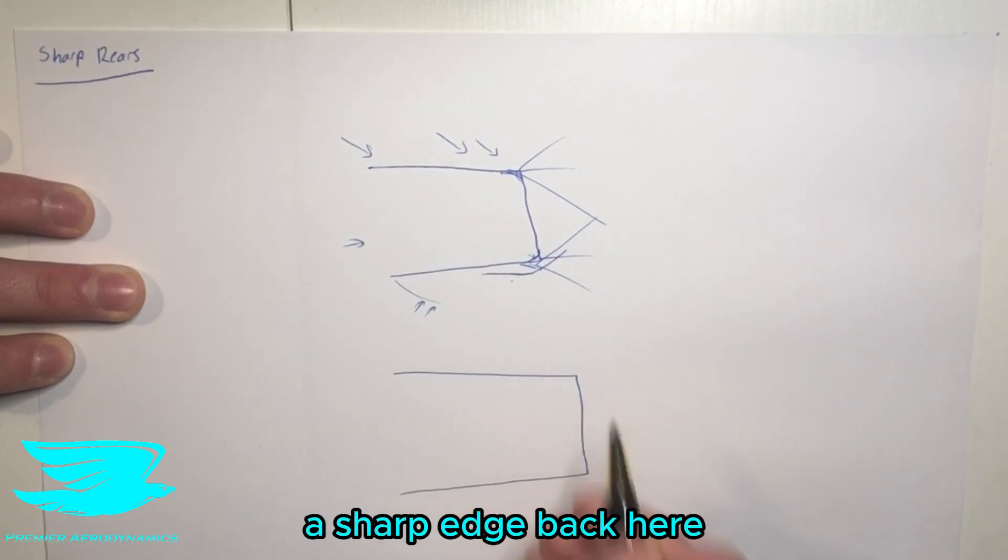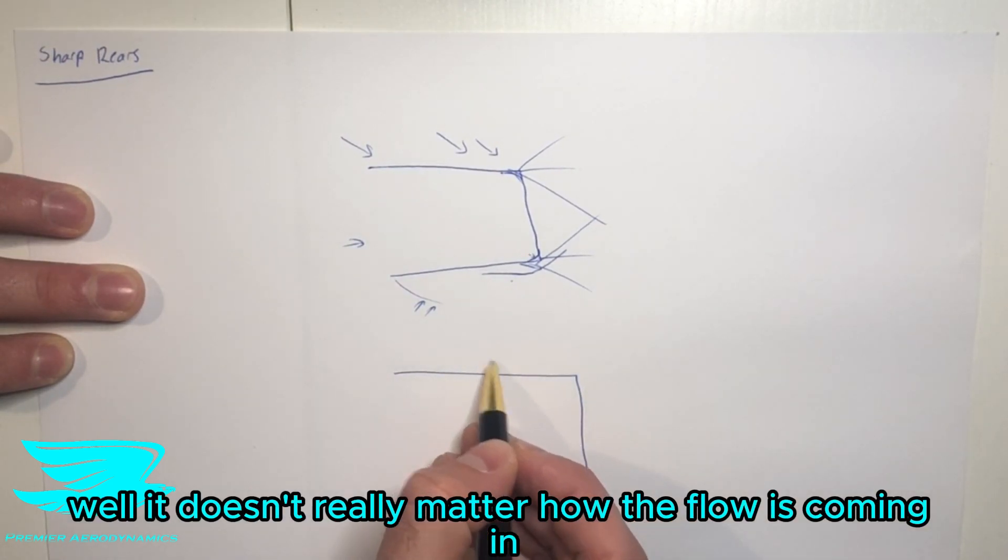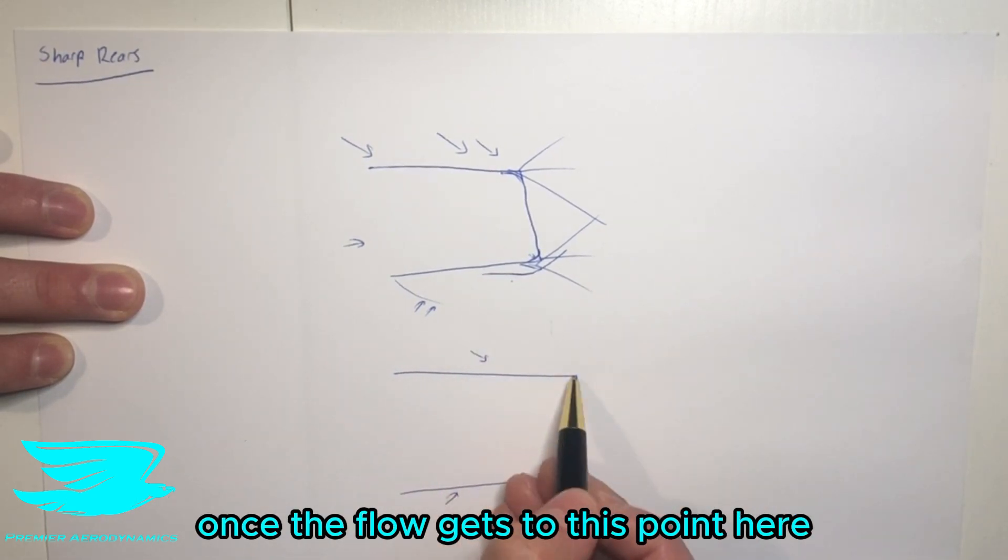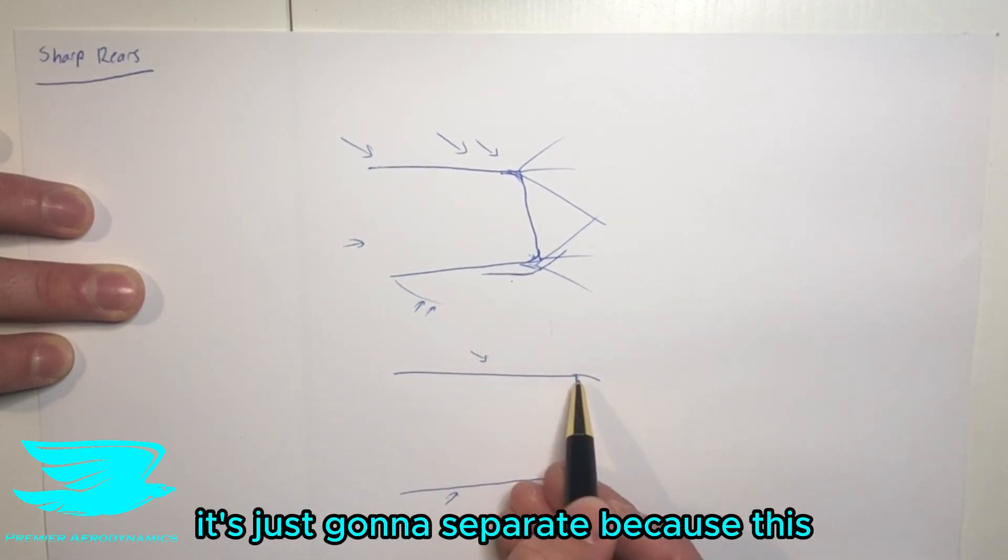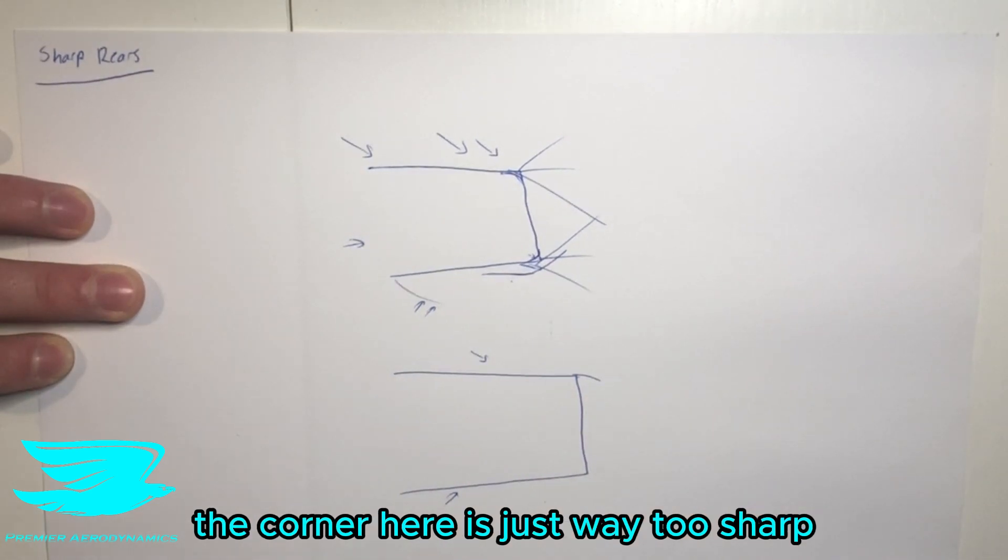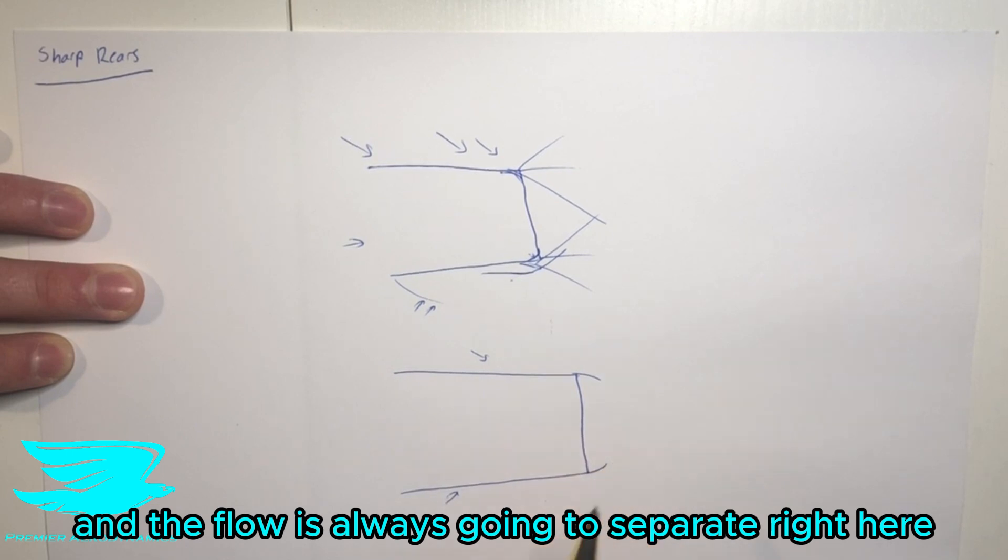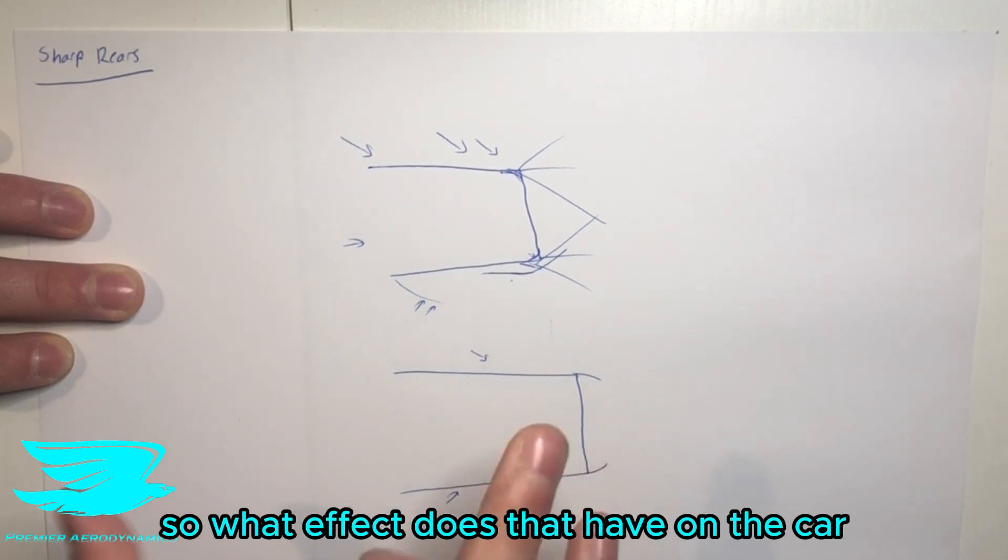Comparing that to a sharp edge back here, well it doesn't really matter how the flow is coming in, if it's coming in this way or this way. Once the flow gets to this point here, it's just going to separate because the corner here is just way too sharp. The radius of curvature is way too sharp and the flow is always going to separate right here, so we know that.